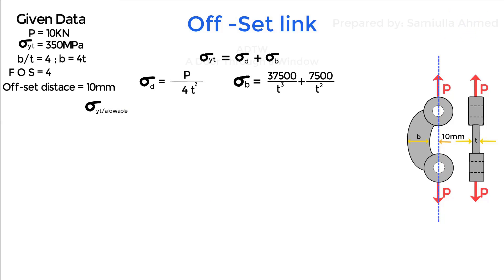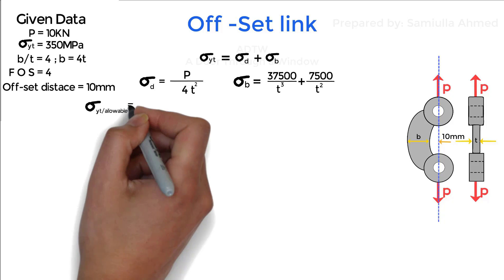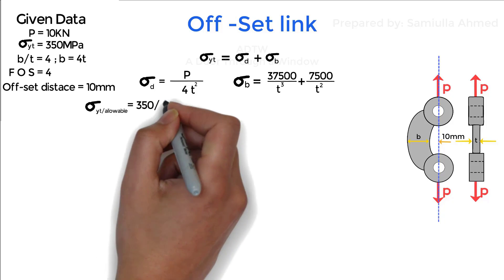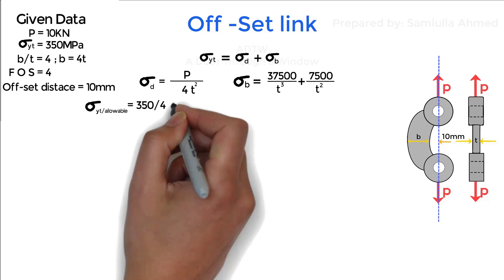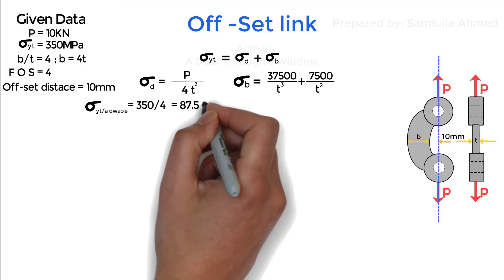Yield stress for the material is given as 350 megapascal and factor of safety is also given as 4. So to get allowable stress for the design we divide 350 by 4. This is the allowable stress for the design which is 87.5 megapascal.